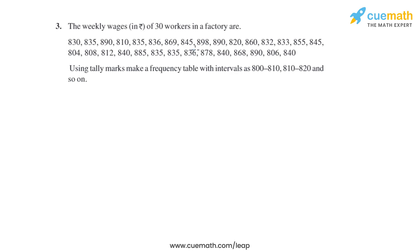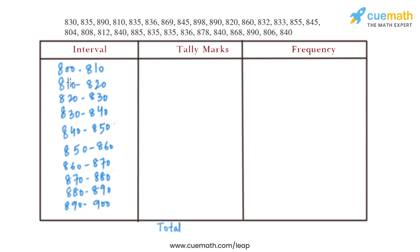The biggest value in the data is 898, so we will mark the interval up to 890 to 900 and draw a frequency table. The intervals are: 800 to 810, 810 to 820, 820 to 830, 830 to 840, 840 to 850, 850 to 860, 860 to 870, 870 to 880, 880 to 890, and 890 to 900.